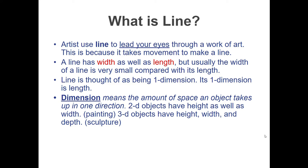A 2D object has height, how tall it is, and width, which is how wide. Think of a painting. A 3D object, three-dimensional, has height, width, and depth.